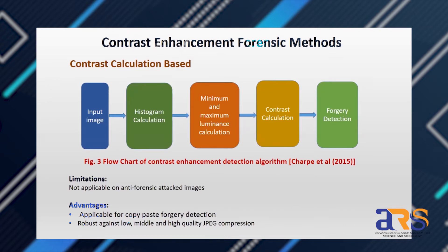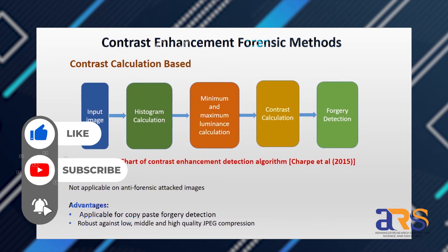One of the most used methods is the contrast calculation based method, given by Chary et al. in 2015. In this algorithm, an input image is taken, its histogram is calculated, then the maximum and minimum luminance are found. Using those values, the contrast is calculated — if contrast equals one, the image is not enhanced; if greater than or less than one, forgery is detected. This method is applicable to copy-paste forgery detection and is robust against low, middle, and high quality pre-JPEG compression, but not applicable to post-JPEG compression or anti-forensic attack images.